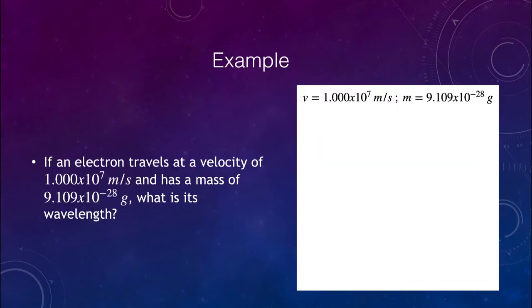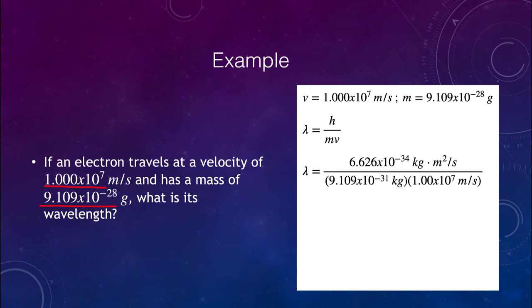If we want to calculate the wavelength of an electron traveling at a velocity of 10 to the seventh meters per second, and the mass of the electron is 9.109 times 10 to the negative 28 grams, we can figure out its wavelength. We use our equation: wavelength equals Planck's constant divided by the mass times the velocity.